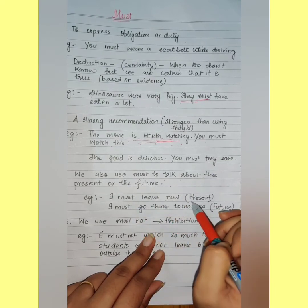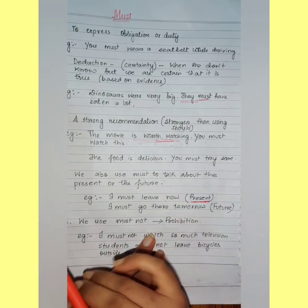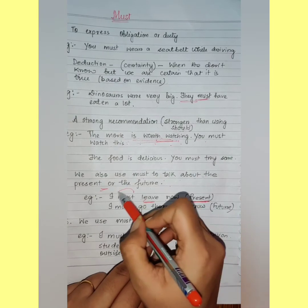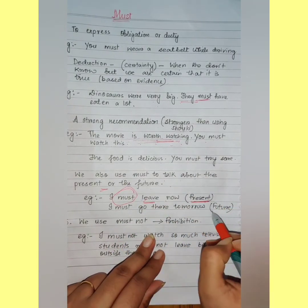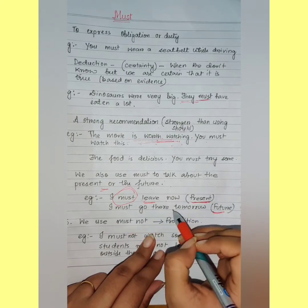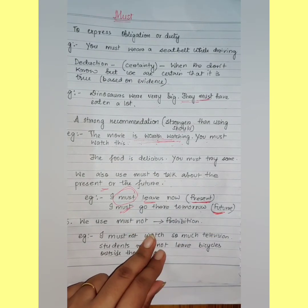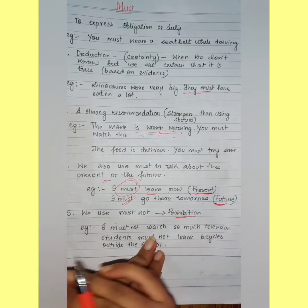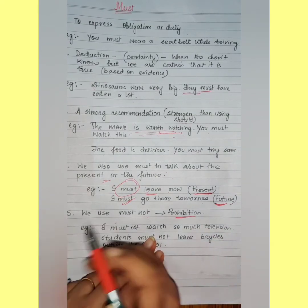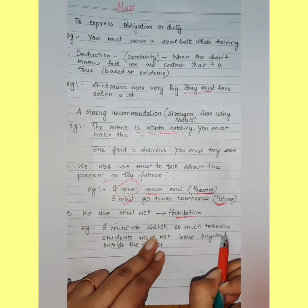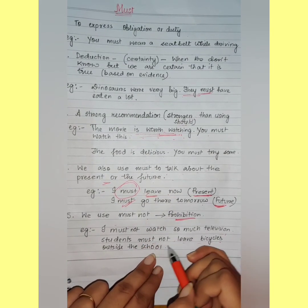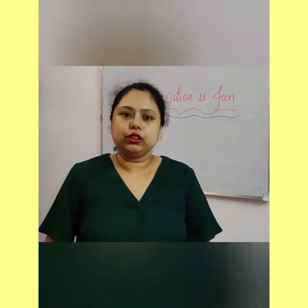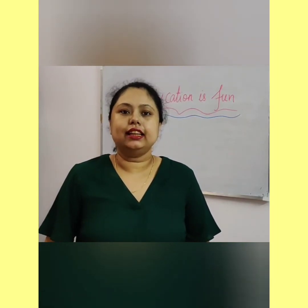When talking about present time: 'I must leave now.' For future time: 'I must go there tomorrow.' We use 'must not' for prohibition — things which are not allowed. For example: 'I must not watch so much television' and 'Students must not leave bicycles outside the school.' Thank you all for watching my video and for your support — keep supporting and keep watching my channel!